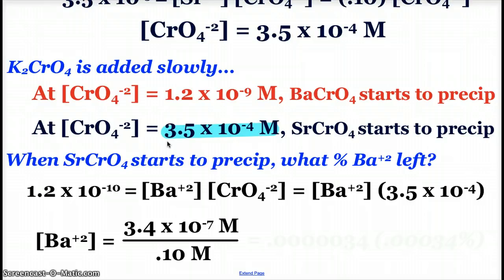I divide that by my original concentration, 0.1 molar, and I find that there's just a tiny bit present still, 0.00034% of the barium ions are still present. If that Ksp difference between the two precipitates was even larger, then you would probably not have any of the other ions present.